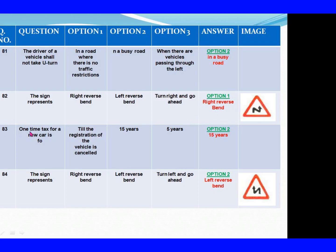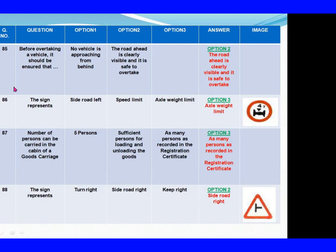Question 83: One-time tax for a new car is for. Option 1: Till the registration of the vehicle is cancelled. Option 2: 15 years. Option 3: 5 years. The right answer is Option 2: 15 years. Question 84: The sign represents. Option 1: Right reverse bend. Option 2: Left reverse bend. Option 3: Turn left and go ahead. The right answer is Option 2: Left reverse bend. Question 85: Before overtaking a vehicle, it should be ensured that. Option 1: No vehicle is approaching from behind. Option 2: The road ahead is clearly visible and it is safe to overtake.